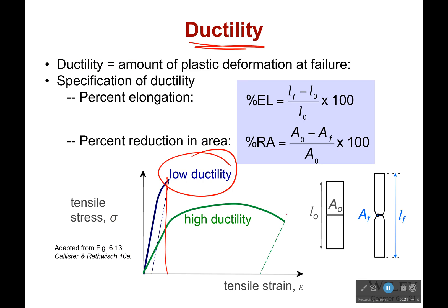Low ductility would be like steel, while something that stretches a lot would have high ductility — that would be more like aluminum. There are two ways we can specify ductility: either as percent elongation, which is final minus initial over initial times 100, or as the percent reduction in area. Either one of those can be used to calculate it.